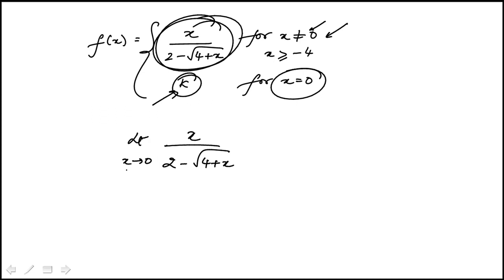And for this to be continuous, whatever this limit is, that value we set to k, then the function will be continuous because f of 0 is k. And if that is equal to this limit, then it would be continuous. So we essentially need to find this limit.